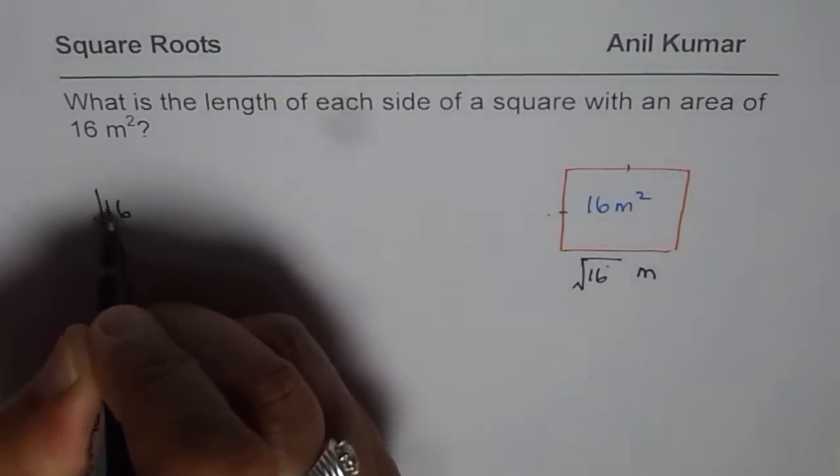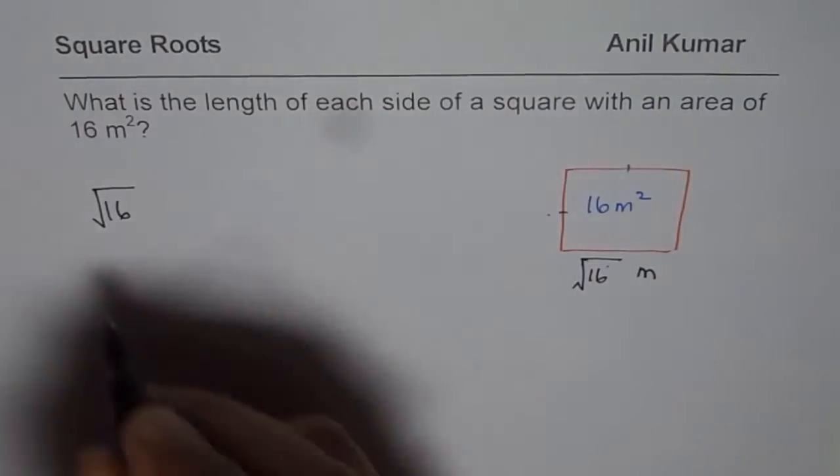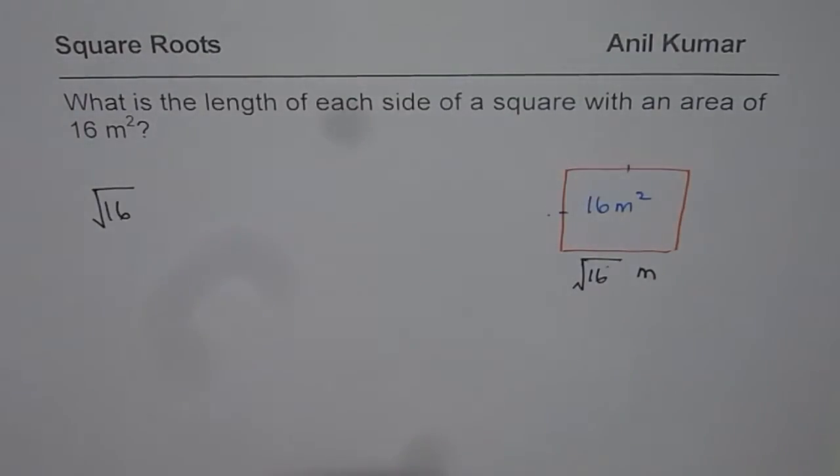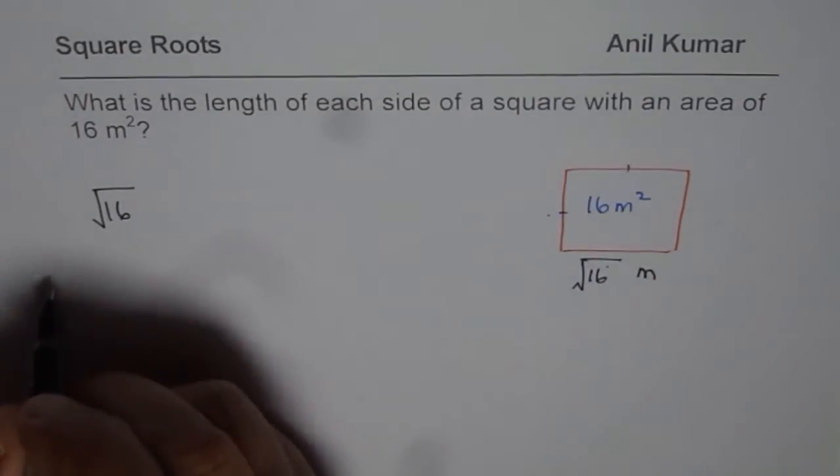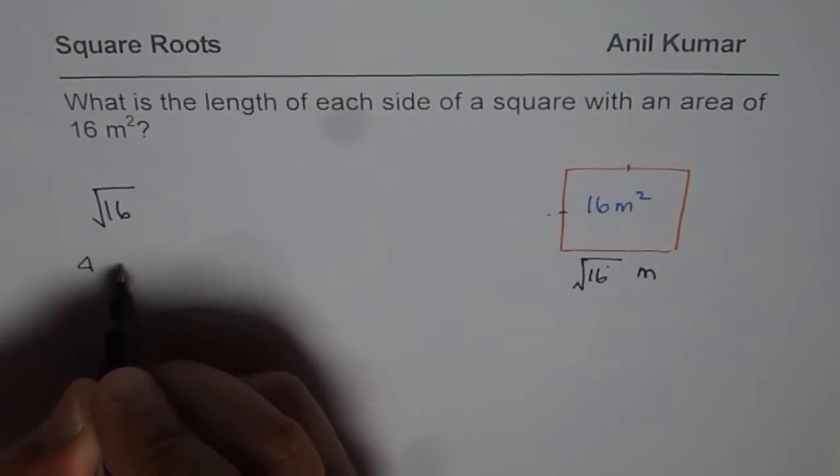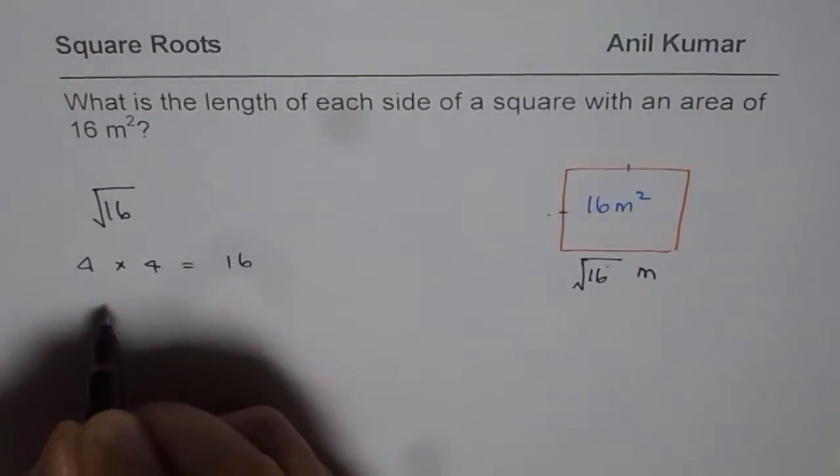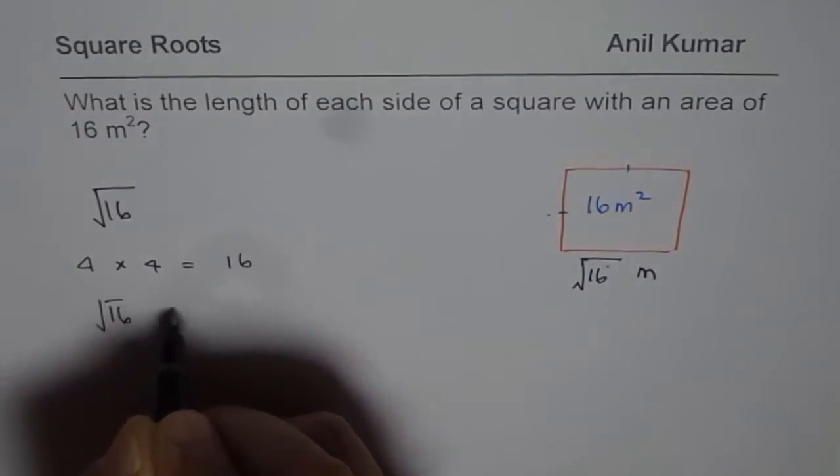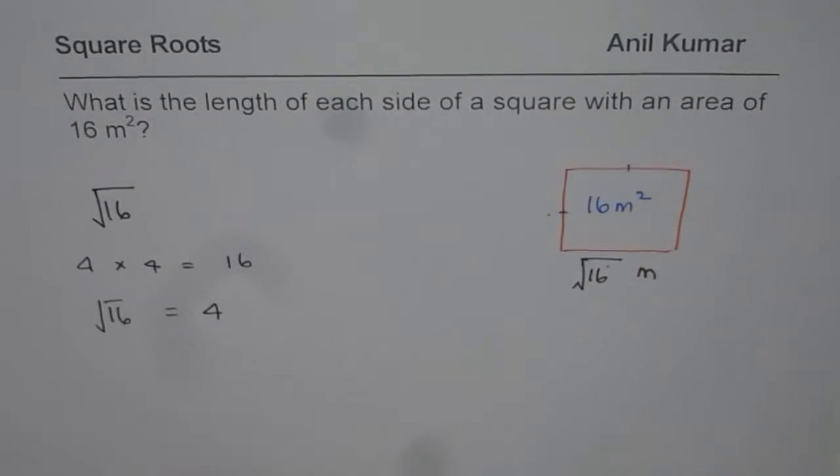Now, let us see how to find square root of 16. There are a couple of ways to find square root of 16. One, we can try out multiplying numbers. 4 times 4 is 16 and therefore square root of 16 is equal to 4. That is one way.